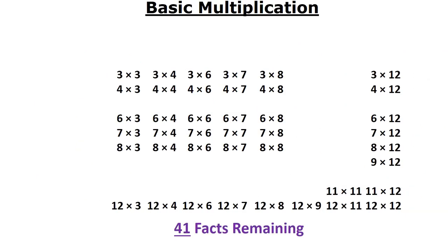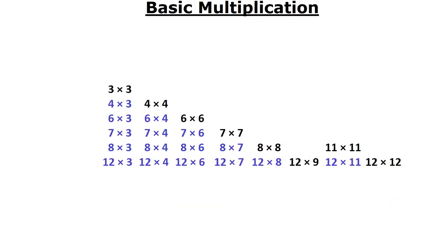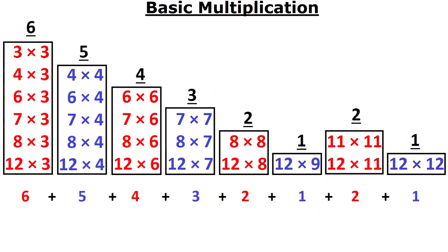That only leaves 41 remaining. And of those remaining 41, once we remove the duplicates of multiplying by 3, 4, 6, 7, 8, and 12, we only have 24 facts remaining.